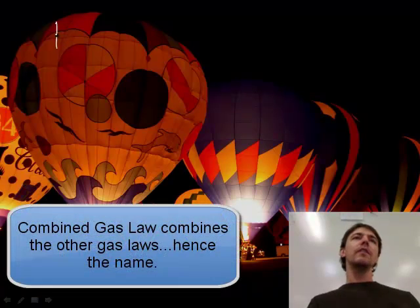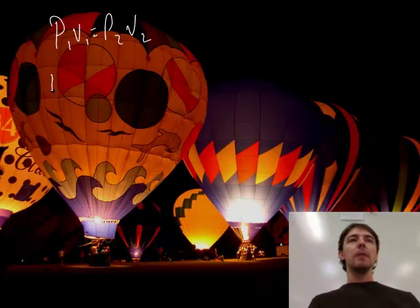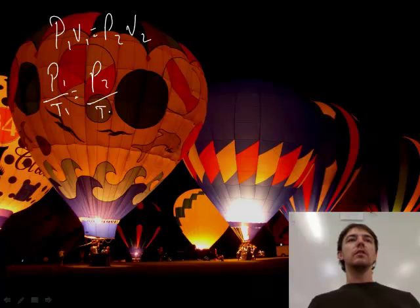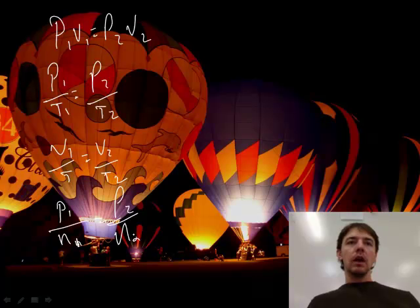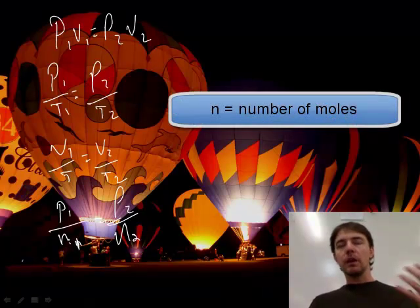So we've got p1v1 equals p2v2. We've used that before. How about p1 over t1 equals p2 over t2? v1 over t1 equals v2 over t2. There's one that we haven't talked about - it has to do with n. p1 over n1 equals p2 over n2, where n is just number of moles. This makes sense: if we increase the number of moles of something, we increase the pressure in that same container.